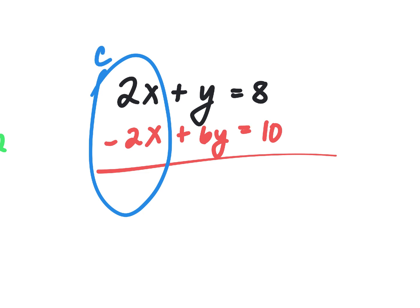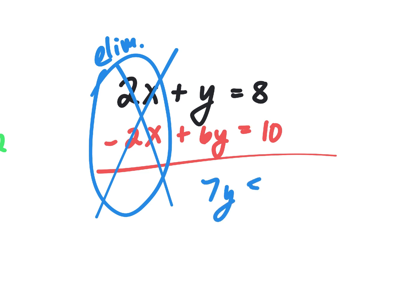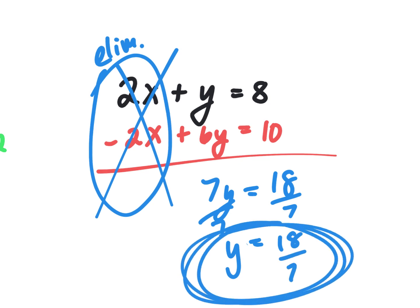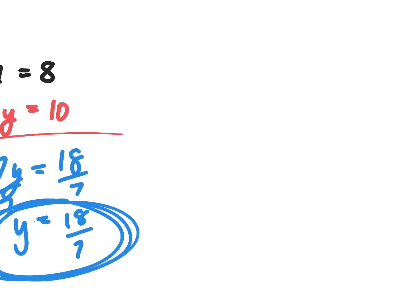Combining y and 6y makes 7y. Combining 10 and 8 makes 18. Final answer — wait, it's an equals, I just wrote it kind of tilted. Then divide by 7: 18 divided by 7. In the real world your answers will usually come out nice — because if the answer came out to 18 divided by 6 it would be 3, and then you could stick 3 in the other equation super easy. We don't usually give you nasty fractions because they're hard to back-solve. That was called elimination.